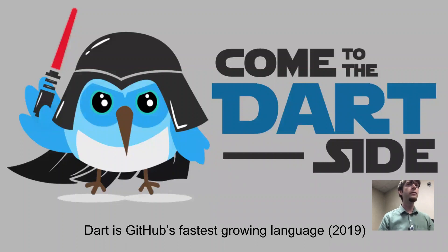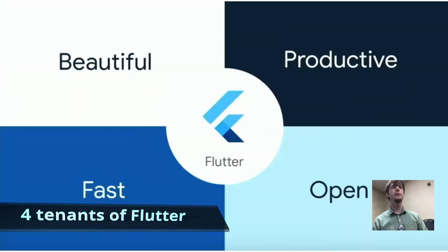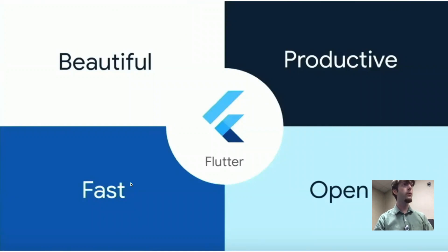Over this past year, Flutter has propelled Dart into the limelight. As of all of 2019, Dart became GitHub's fastest-growing language — incredible for a language that officially came out one month before. Flutter has four tenants it's kept since going live: they make things beautiful following material design; the app runs fast at about 60 frames per second even on older Android and iPhones; they designed the process to make you as the developer more productive, and Hot Reload is something I'll cover; and the entire toolkit is open source.